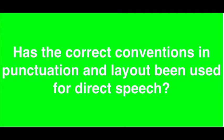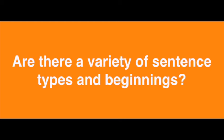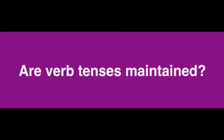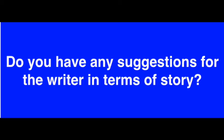Does the writer need to check spelling in places? Does the writer use a variety of sentence types and beginnings? Has the writer maintained verb tenses? Is the vocabulary appropriate and varied? Do you have any suggestions for the writer in terms of the story? You can also add questions that you feel are important, and I'd recommend that you leave space after each of these questions for the editor to make suggestions about where you can improve.